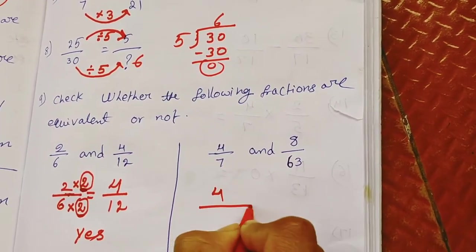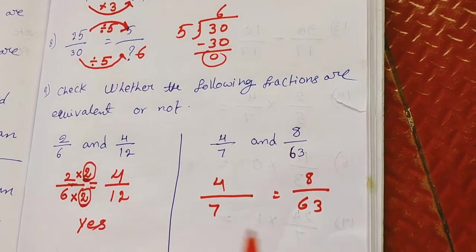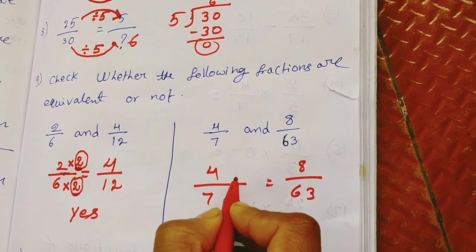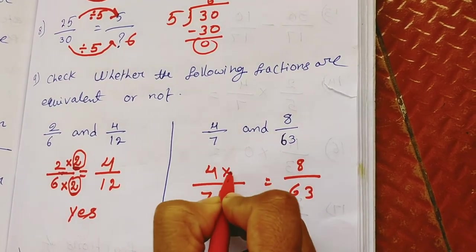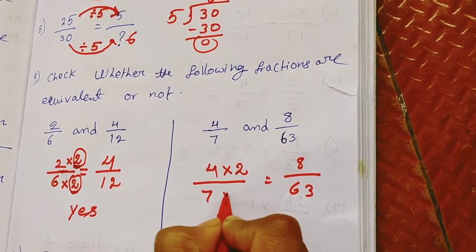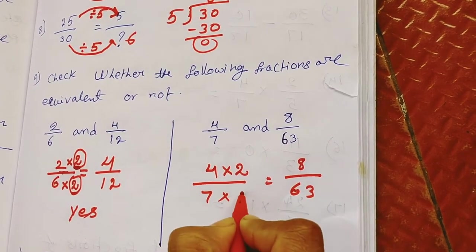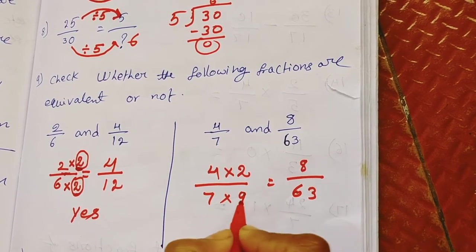So what about this? Here 4 by 7 equals 8 by 63 or not. Whether we check it, it is correct or not. So 4 into 2 is 8, 4 times 2 are 8. Here 7 into how much is 63? 7 times 9 are 63.